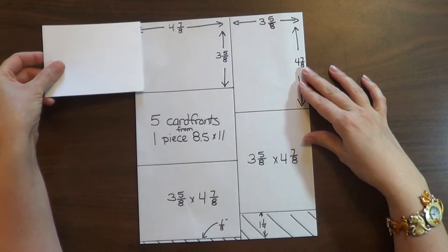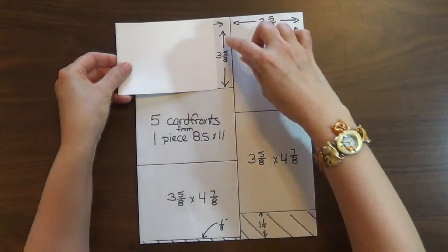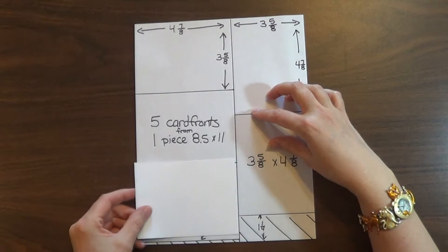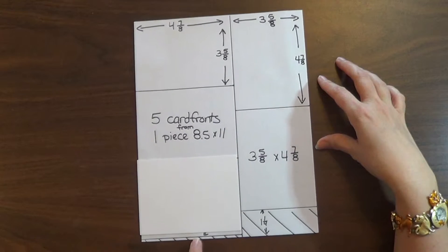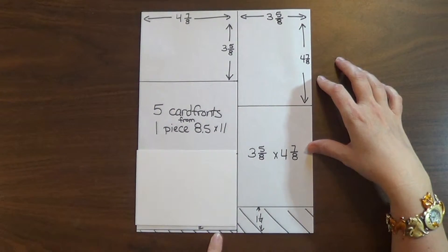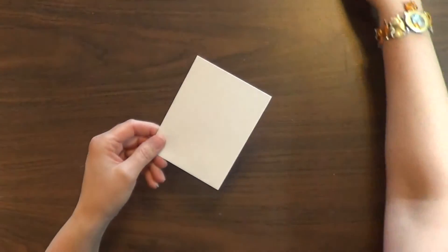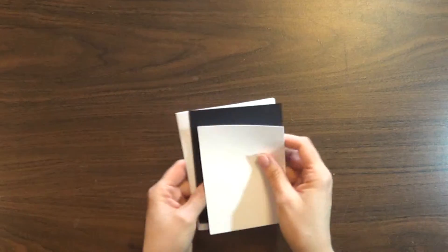And then on the other side that you cut at four and seven-eighths, you cut the other portion at three and five-eighths. You get two, three out of that section. You're just left with one-eighth of an inch on the bottom. So you get three from this side and two from this side. So you'll get five card fronts out of one sheet of cardstock.